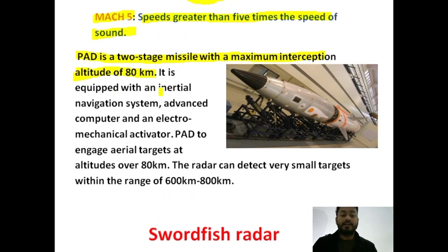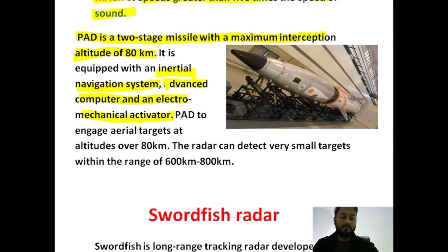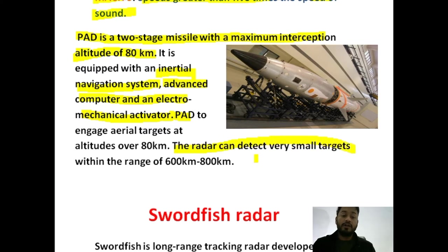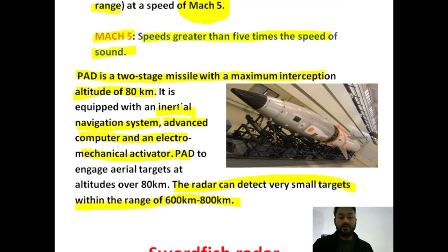Prithvi is equipped with an inertial navigation system and advanced computer and electromechanical actuators — highly advanced technologies that help in 100% accuracy of targeting. It is also developed by DRDO. It has a radar that can detect small targets within a range of 600 to 800 kilometers, so it can intercept very small targets as well.